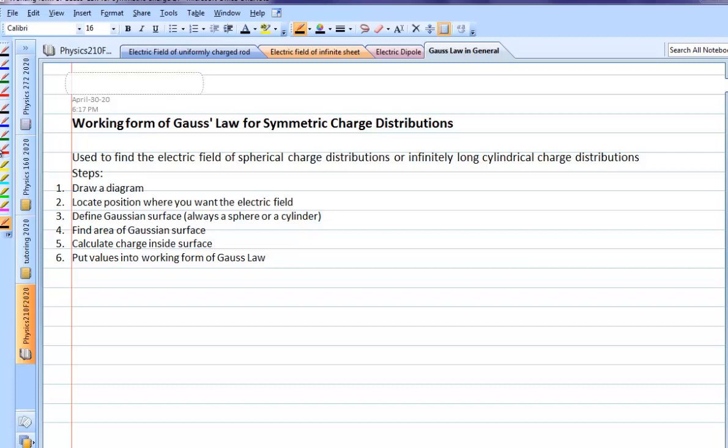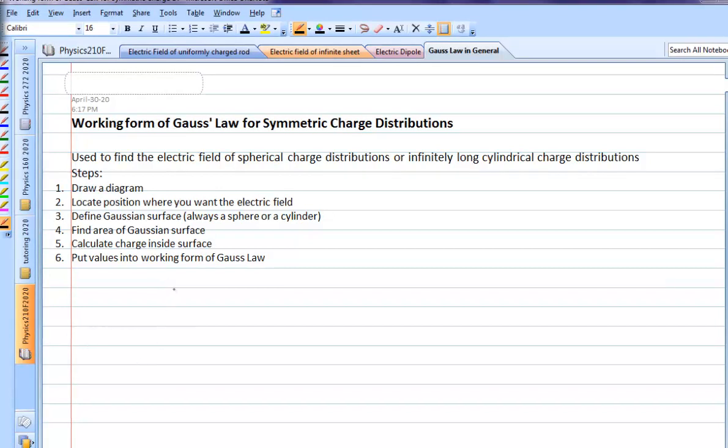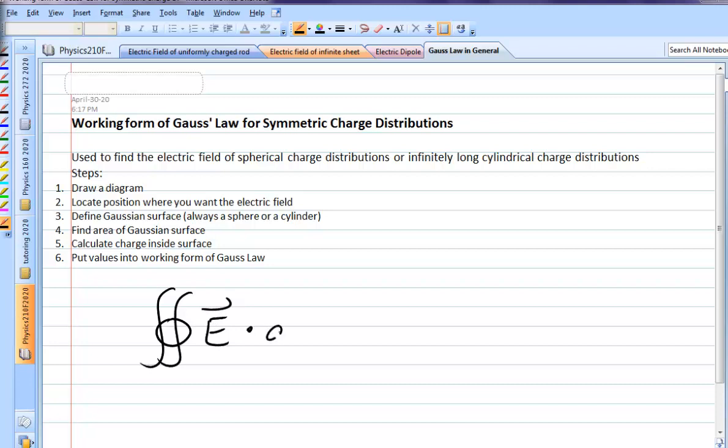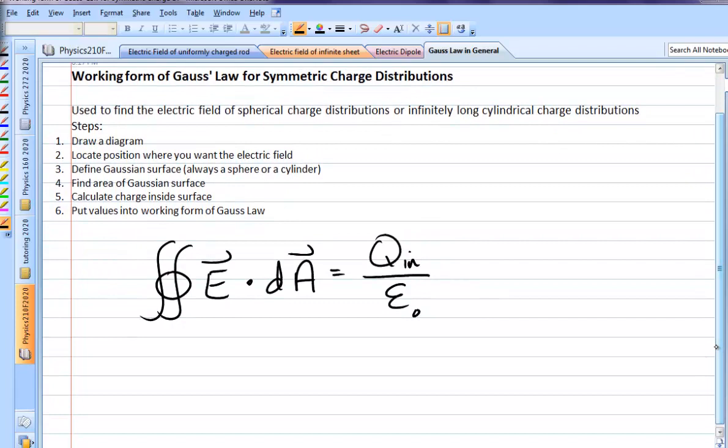Gauss's Law is one of the fundamental laws of electromagnetic theory, and in all its glory, it looks like this: the closed surface integral of E dot dA equals Q_in over epsilon naught.